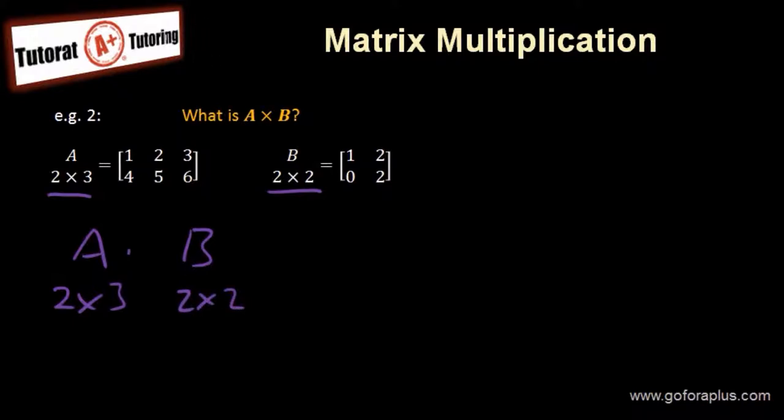It's 2 by 3 of A times 2 by 2 of B. If we look at this, we see that these two are not the same. So you cannot do A times B. So matrix A is not able to multiply with matrix B. So there will be no solution for this answer.